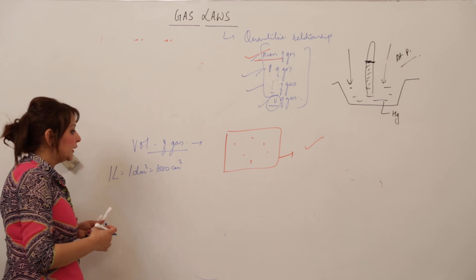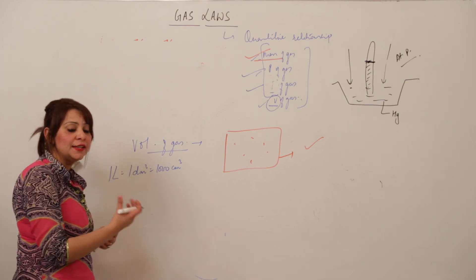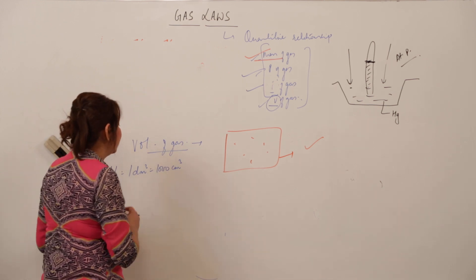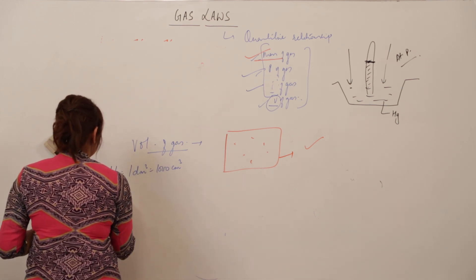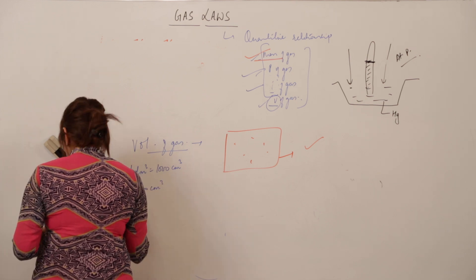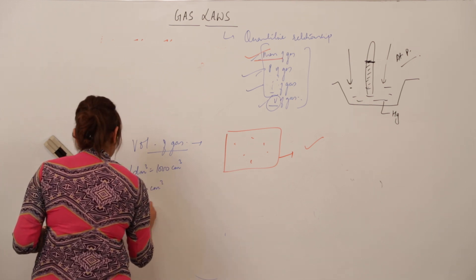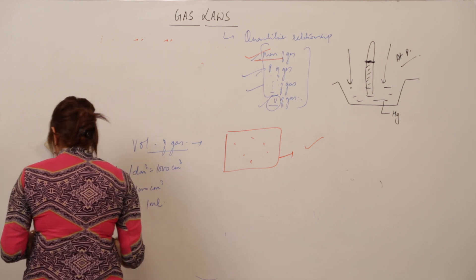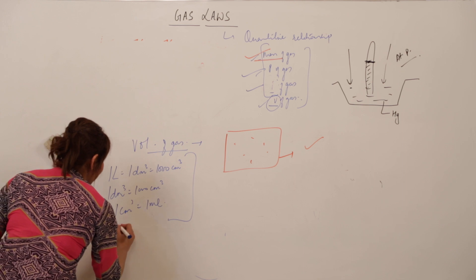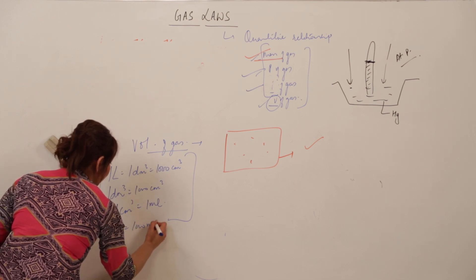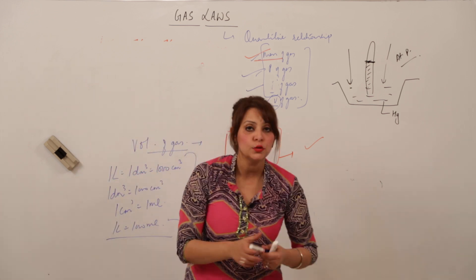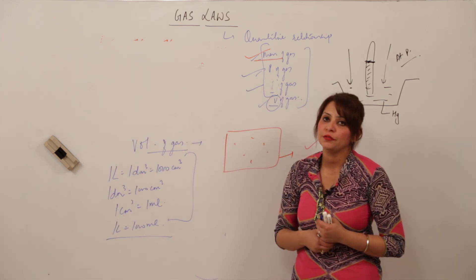Again you should know the relation between these units because in numericals you get to convert in these units, so you should be familiar with the terms and the conversions and the relation they have. Similarly one decimeter cube consists of thousand centimeter cube and one centimeter cube corresponds to one milliliter. So these are the units in which we can, again one liter is equal to thousand ml you know that. So these are the different units which will be used while calculating the volume of the gas.